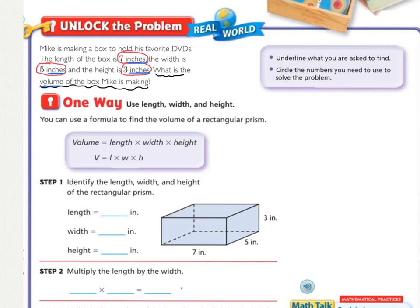The first step to using the formula is to actually identify the length, the width, and the height of the rectangular prism. So first you need to find the length, which depending on how you're holding your rectangular prism, it can be either of the bottom numbers. I'm going to do this one as my length, the 7 inches. And then the width would be my 5 over here, and the height would be this 3 inches.